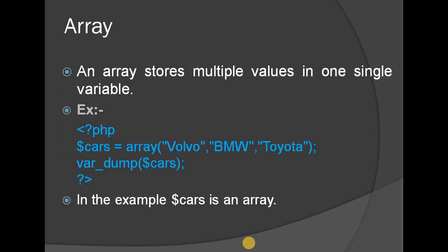Array can store multiple values in one single variable. In a single variable, multiple values are stored — string, integer, float. For example, $cars = array('Volvo', 'BMW', 'Toyota'). Multiple values in a single variable.